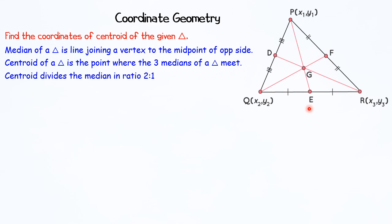First, let's find the coordinates of point E. Point E is the midpoint of QR, so using the midpoint formula, we can find the coordinates of E.